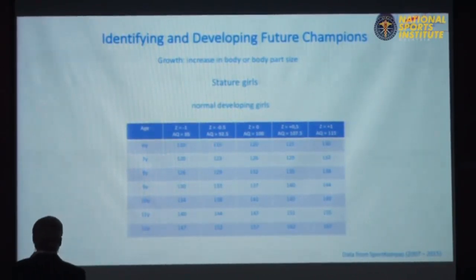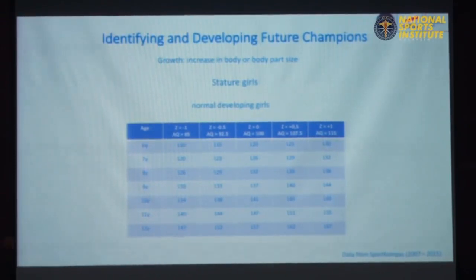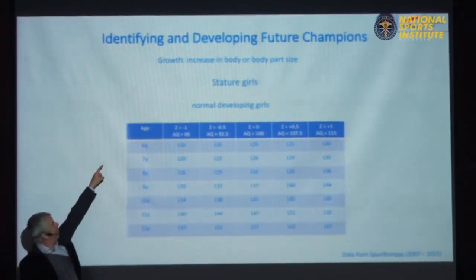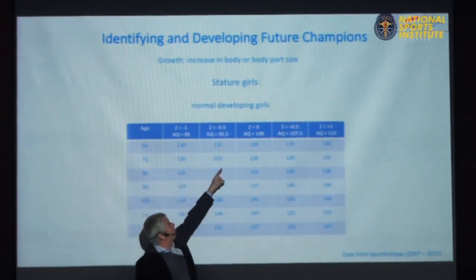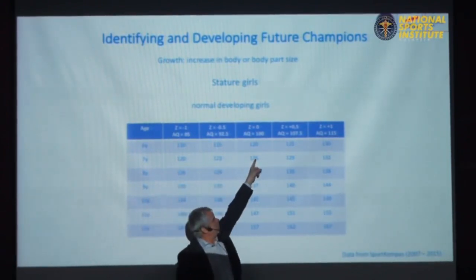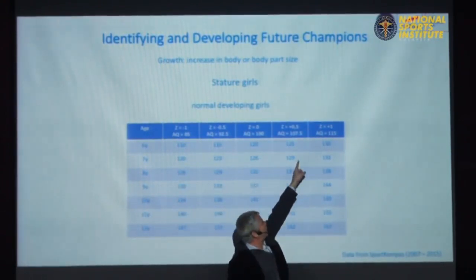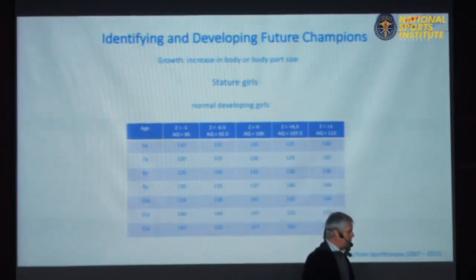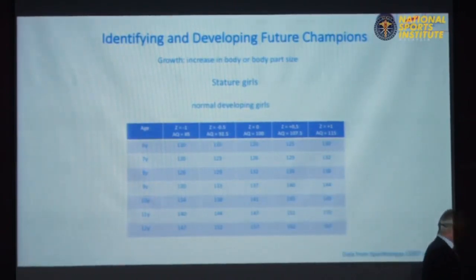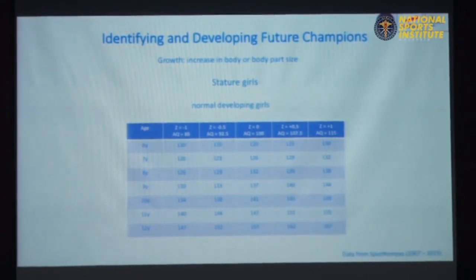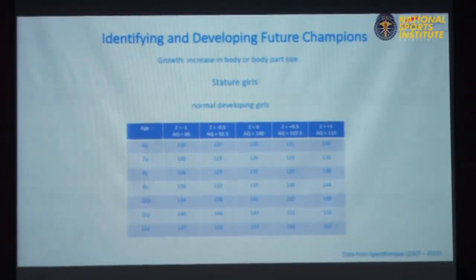Normal developing girls at the age of 6 are on average 120 centimeters, with one standard deviation further being 130. At the age of 7 they are 126, and at the age of 10 they are 141, and so on. Those numbers mean something.